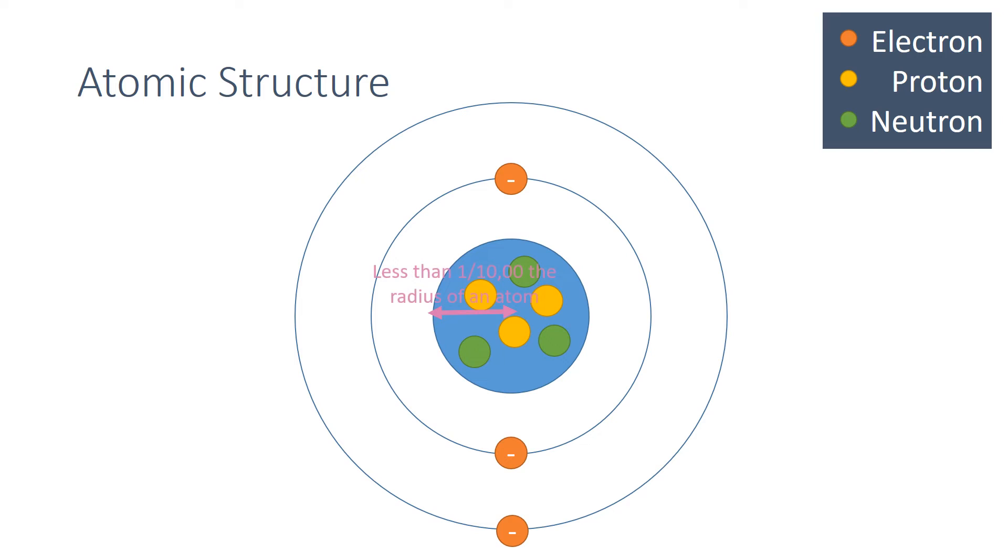The radius of a nucleus is less than 1 ten-thousandth of the radius of the atom, and most of the mass of the atom is concentrated within the nucleus.